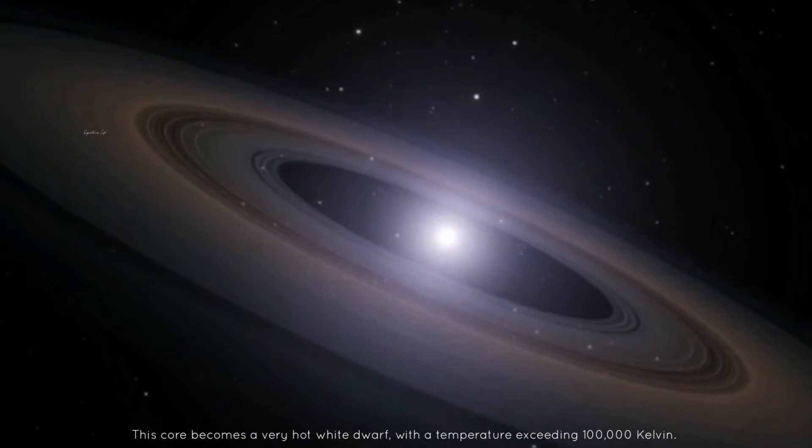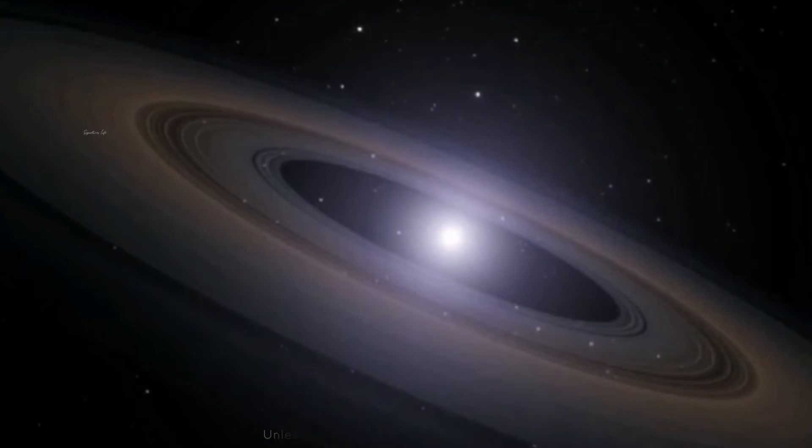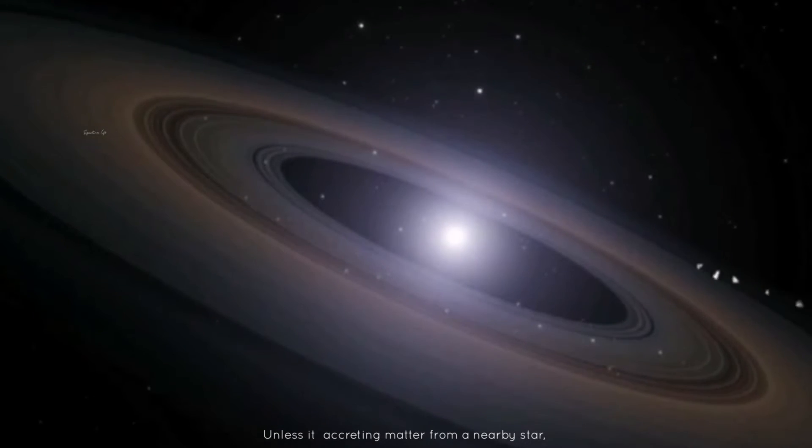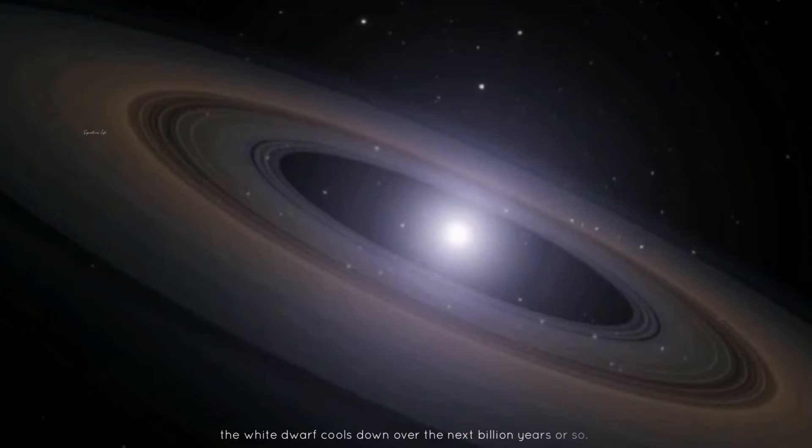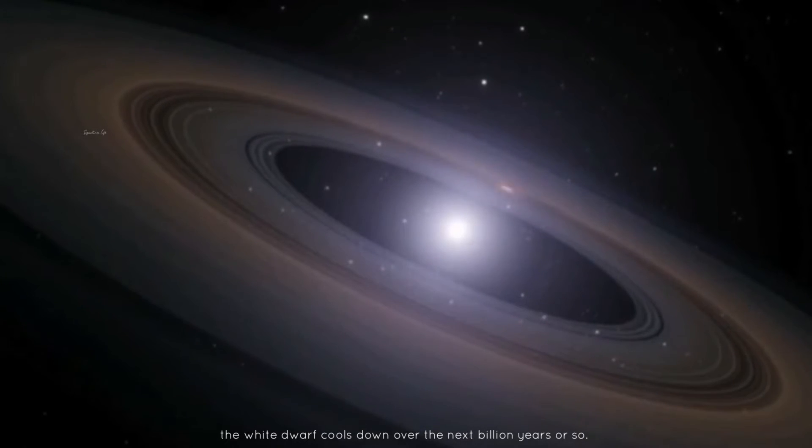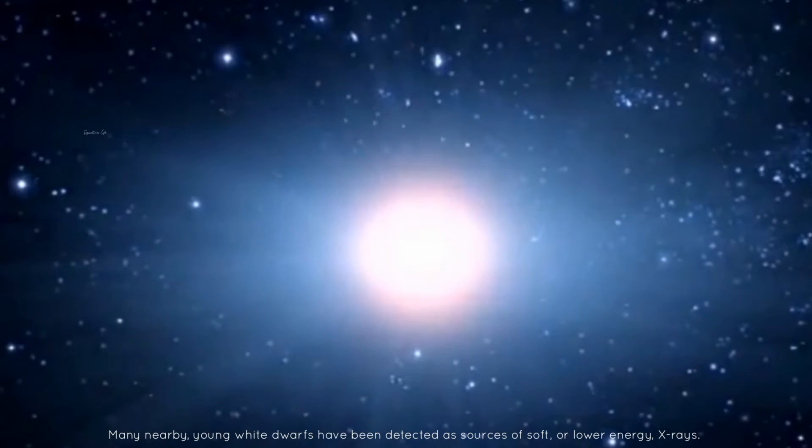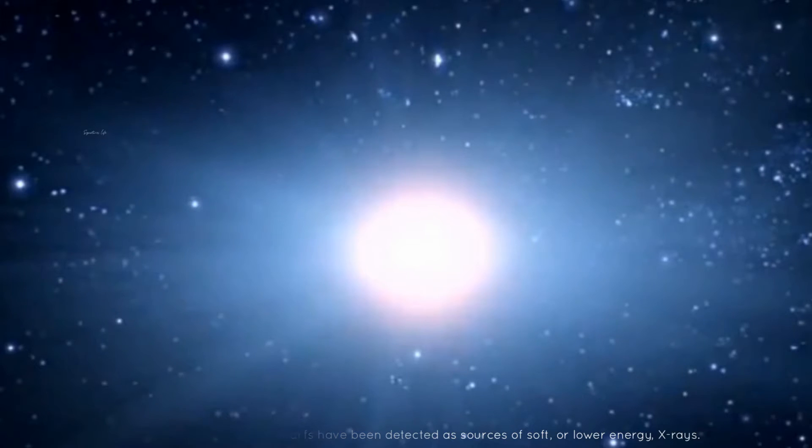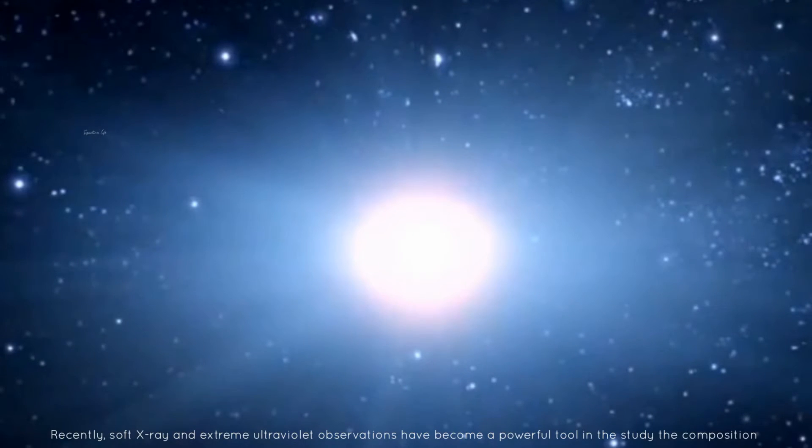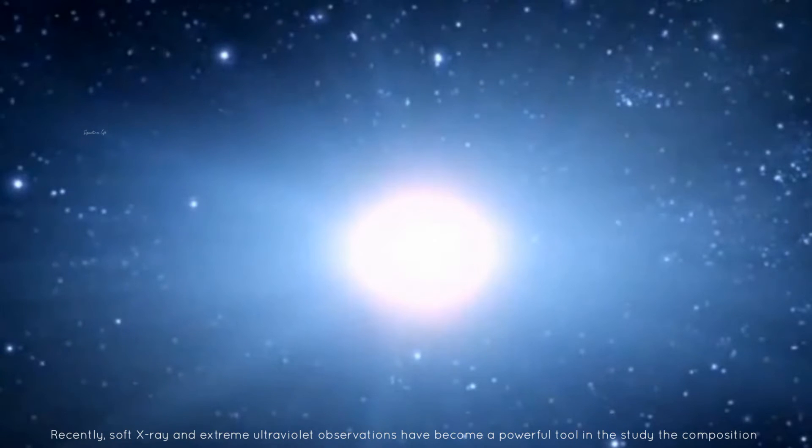This core becomes a very hot white dwarf with a temperature exceeding 100,000 Kelvin. Unless it is accreting matter from a nearby star, the white dwarf cools down over the next billion years or so. Many nearby young white dwarfs have been detected as sources of soft or lower energy x-rays.